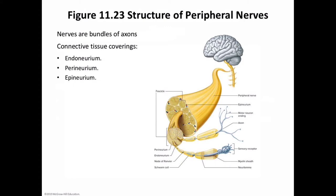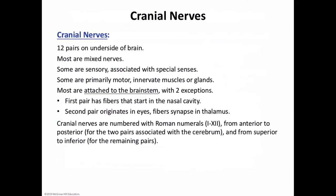There are 12 pairs of cranial nerves located on the underside of the brain. Most are mixed nerves, but some associated with special senses such as smell and vision have only sensory fibers, while others innervating muscles and glands are primarily motor. The first pair has fibers beginning in the nasal cavity that synapse in the frontal lobe of the cerebrum. The second pair, also sensory, originates in the eyes with fibers that synapse in the thalamus. The remaining cranial nerves attach to the brain stem, and their fiber direction depends on whether they are sensory, motor, or mixed. All cranial nerves pass through foramina of the skull and lead to areas of the head, neck, and trunk.